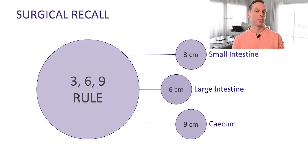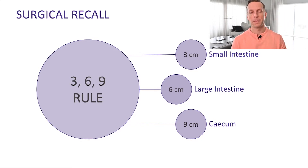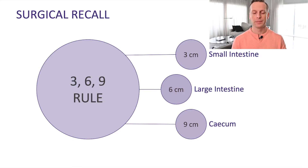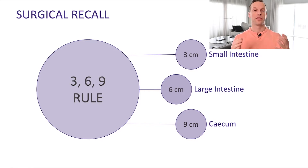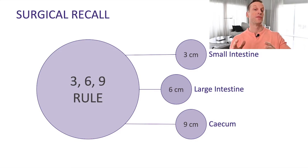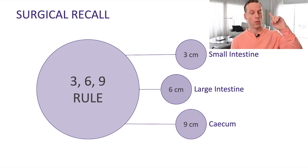When thinking about an X-ray and trying to determine whether the bowel is distended, we use the three-six-and-nine rule. Three centimeters for small bowel represents 50% more than the upper limit of normal — small bowel is typically two centimeters in diameter, so three centimeters is considered dilated. Similarly, the colon's upper limit of normal is four centimeters, so six centimeters is considered distended. The cecum's upper limit is typically six centimeters, so nine centimeters is dilated — a nine-centimeter cecum is a red flag for possible perforation and requires very careful management.